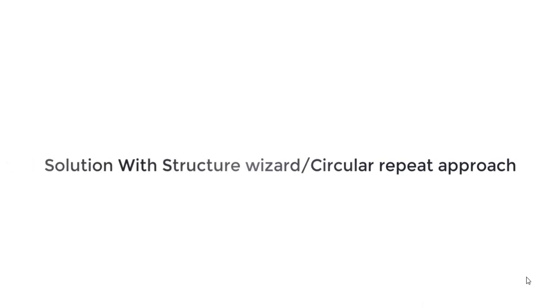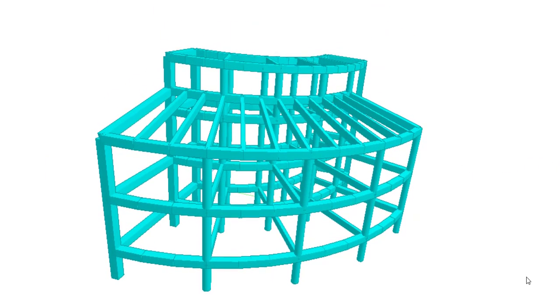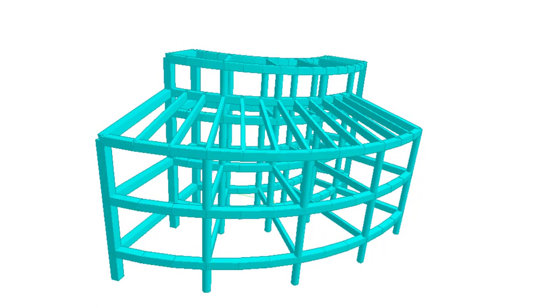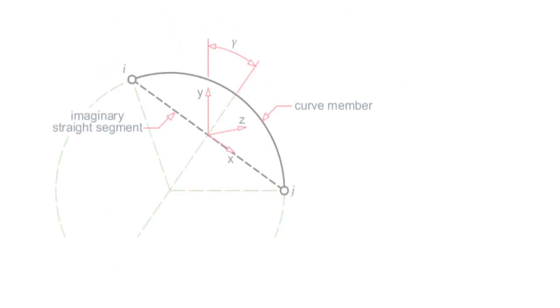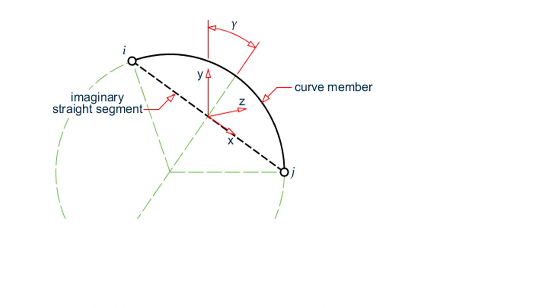While modeling a curve profile in STAAD Pro, we basically have two options available through which we can model our curve profile. We will discuss each of them and understand their pros and cons. So let's first understand what a curve beam is. According to STAAD, a curve beam is one whose local X axis has a curve profile. The curvature of that axis is specified through a radius, and the plane of the curve is specified through a gamma angle.